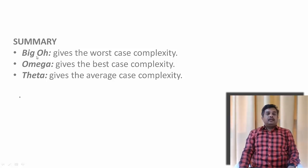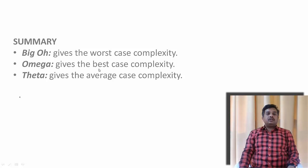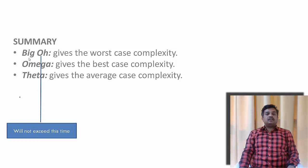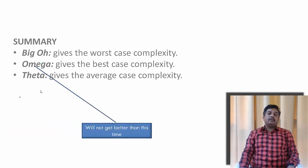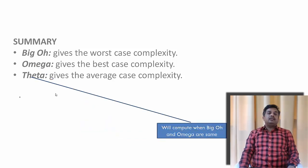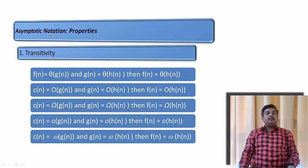If we want to understand practically: Big O notation gives us the worst case complexity, Omega notation gives the best case complexity, and Theta notation gives the average case complexity. Big O gives a time that f(n) will never exceed; Omega gives a time it will never get better than; and Theta notation is used when Big O and Omega are the same.